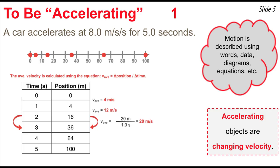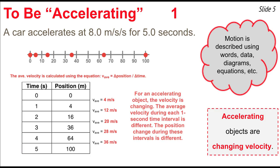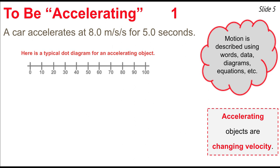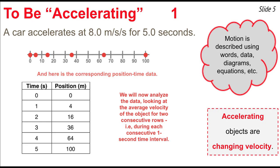In the third second, the velocity averages 20 meters per second. In the fourth second, position changes by 28 meters, making the average 28 meters per second. And for the last second, the object averages 36 meters per second. So the accelerating object is changing its velocity each consecutive second — each averaged velocity is different from the one second before.